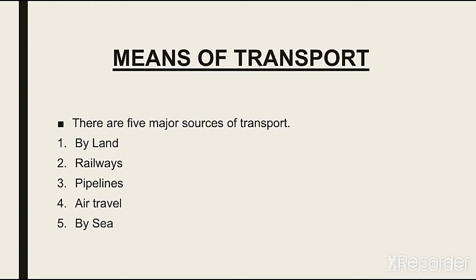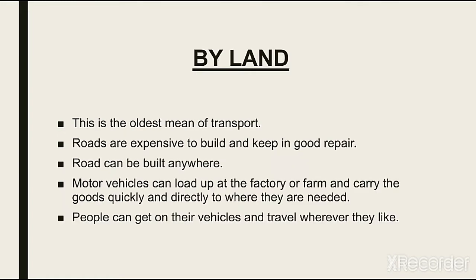Pipelines کے ذریعے جو transport ہے، air travel یعنی کہ ہوائی جہاز کے ذریعے جو transport کی جاتی ہے، اس کے علاوہ by sea ہے۔ تو transport کے حصے میں جو means of transport دیکھنے ہیں وہ پانچ ہیں۔